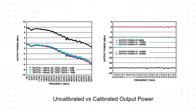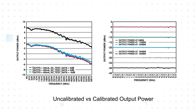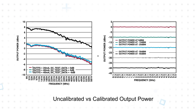Band flatness is critical to signal generators, and the CN0511 is calibrated from DC up to 5.5 gigahertz to correct for amplitude errors inherent to any signal generator. The calibration coefficients are stored in EEPROM and provide an overall band flatness better than plus or minus 0.5 decibels from 0 dBm to minus 40 dBm.